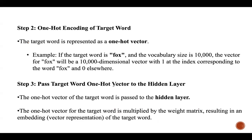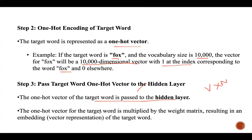Step two is one-hot encoding of the target word. The target word 'fox' is represented as a one-hot vector. With a vocabulary size of 10,000, the vector for 'fox' will be a 10,000-dimensional vector with 1 at the index corresponding to 'fox' and 0 everywhere else. Step three is to pass this target word one-hot vector to the hidden layer, which contains a weight matrix of size V×N, where V is vocabulary size and N is the embedding size.